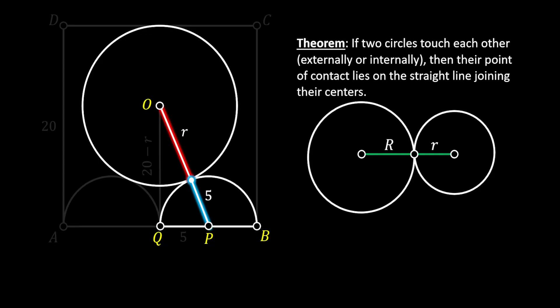We can also say that the line OP has the length which equals the sum of both radii of those two circles, which equals r plus 5.